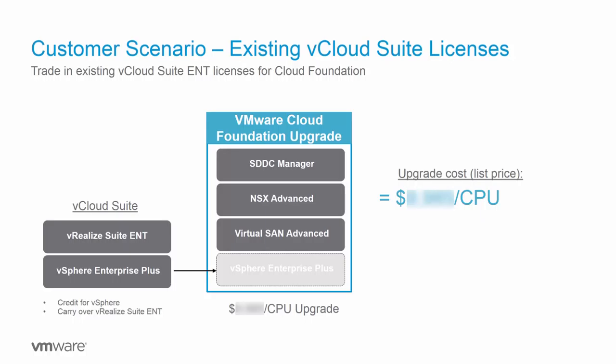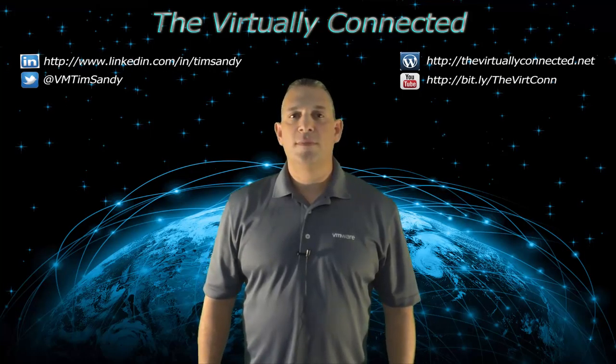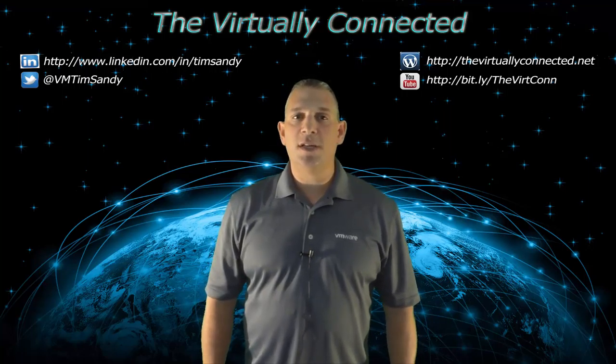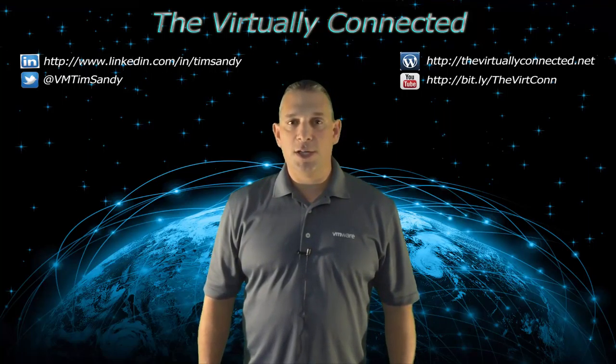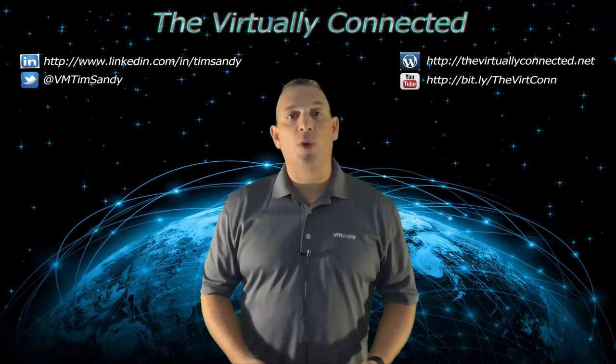Finally, in this example they already have the vRealize suite and vSphere Enterprise licenses. To get them to the core Cloud Foundation, you simply add the SKUs for the SDDC Manager, NSX Advanced, and vSAN Advanced. No matter what the customer does or doesn't already have in licenses, it's very easy to bring them to the core Cloud Foundation by simply adding on whichever SKUs are needed for the components they don't already own.